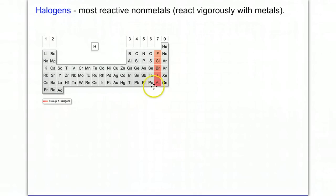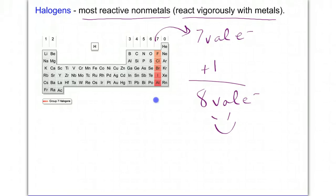Halogens are very important. They are in group 7. These are the nonmetals that have 7 valence electrons. Because of that, they only need 1 more electron in order to have 8 valence, which would give them their stability. They're highly reactive. They're actually the most reactive nonmetals and react vigorously with metals.